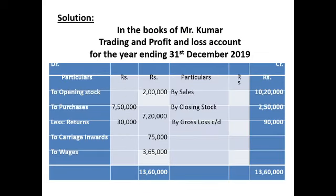The solution: first we prepare the trading account in the books of Mr. Kumar — trading and profit and loss account for the year ending 31st December 2019. We start with opening stock Rs. 2,00,000. Purchases Rs. 7,50,000 less purchase returns gives net purchases Rs. 7,20,000. Carriage inward Rs. 75,000, wages Rs. 3,65,000. On the credit side: sales Rs. 10,20,000, closing stock Rs. 2,50,000. Since expenses exceed income, we arrive at a gross loss.